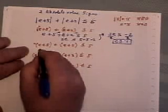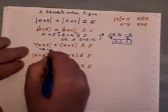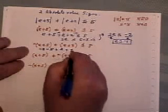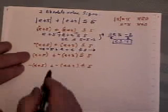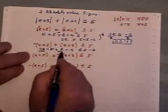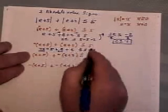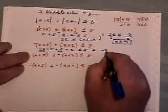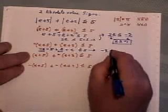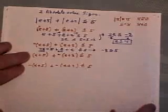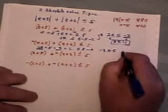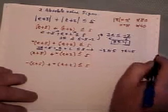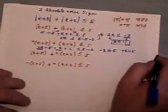This would be negative e subtract 5 plus e plus 2 less than or equal to 5. Now right away we're going to run into a problem because this and this cancel. So we'd be left on the left hand side with negative 3 and the right hand side with positive 5. Negative 3 less than or equal to positive 5, that's always true, no matter which value of e you throw in.